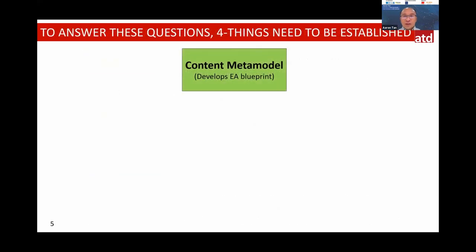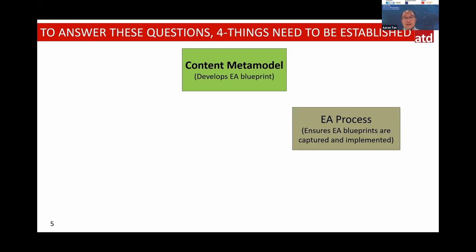To answer these questions, a financial services bank needs to establish, first, a content meta model — the structure of your enterprise. I equate this with an entity-relationship diagram, but at the enterprise level. Do we have that view and design? Without it, we can't answer those previous questions. We'll be like a headless chicken, always reactive. Second is process — we need to know the framework, methodology, and all the blueprints.